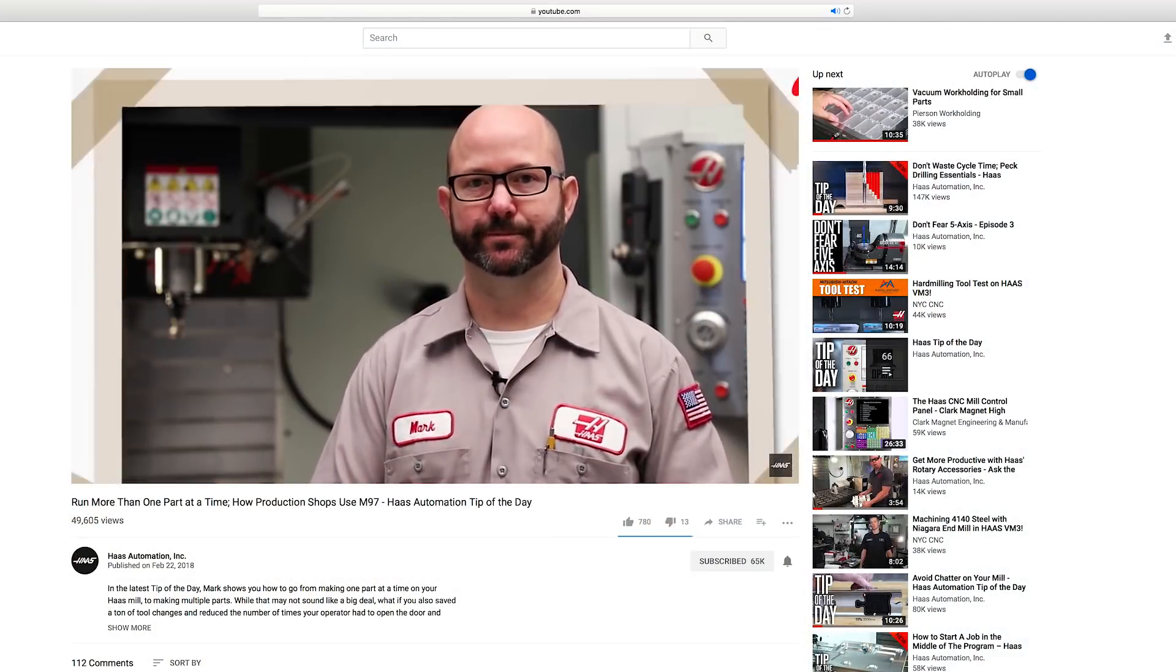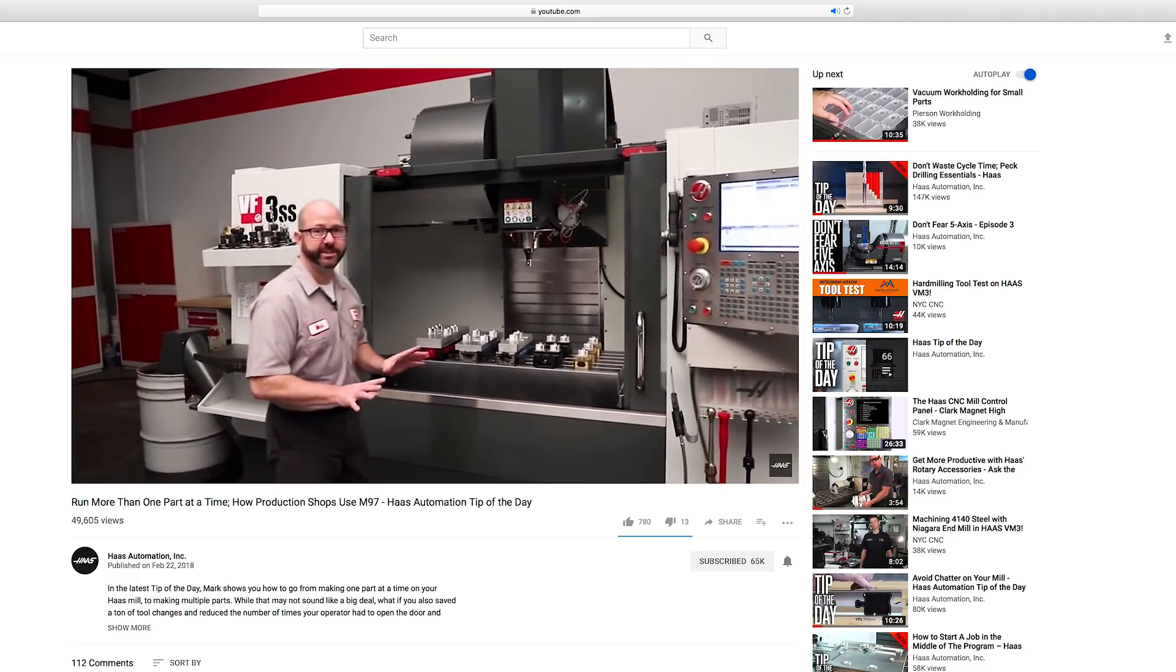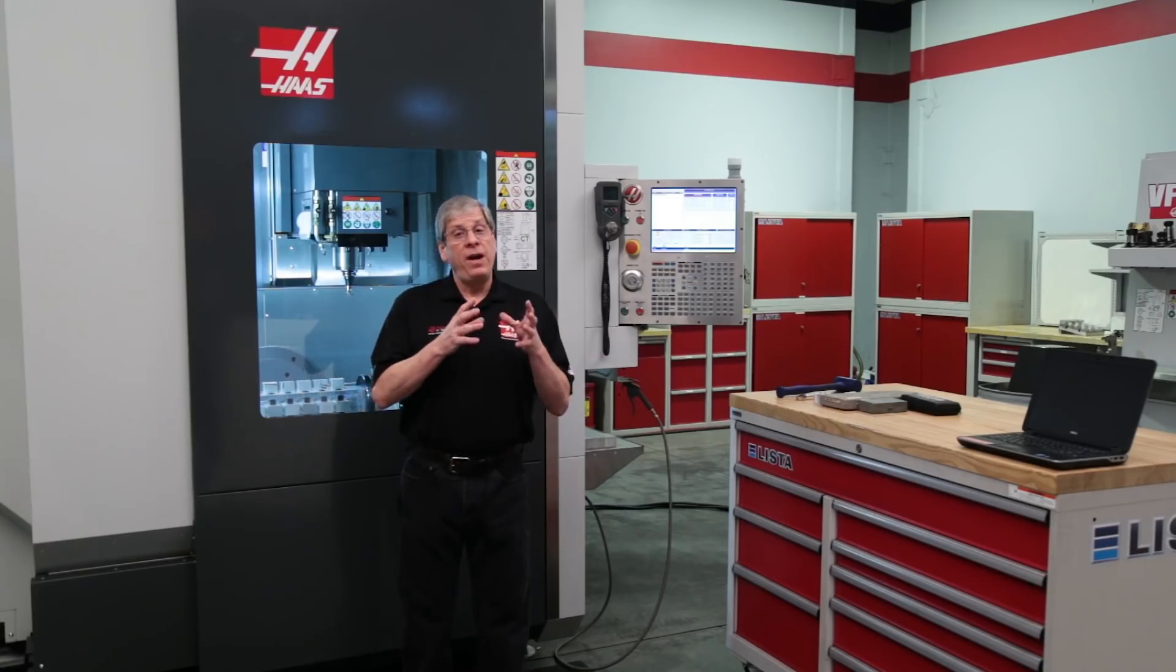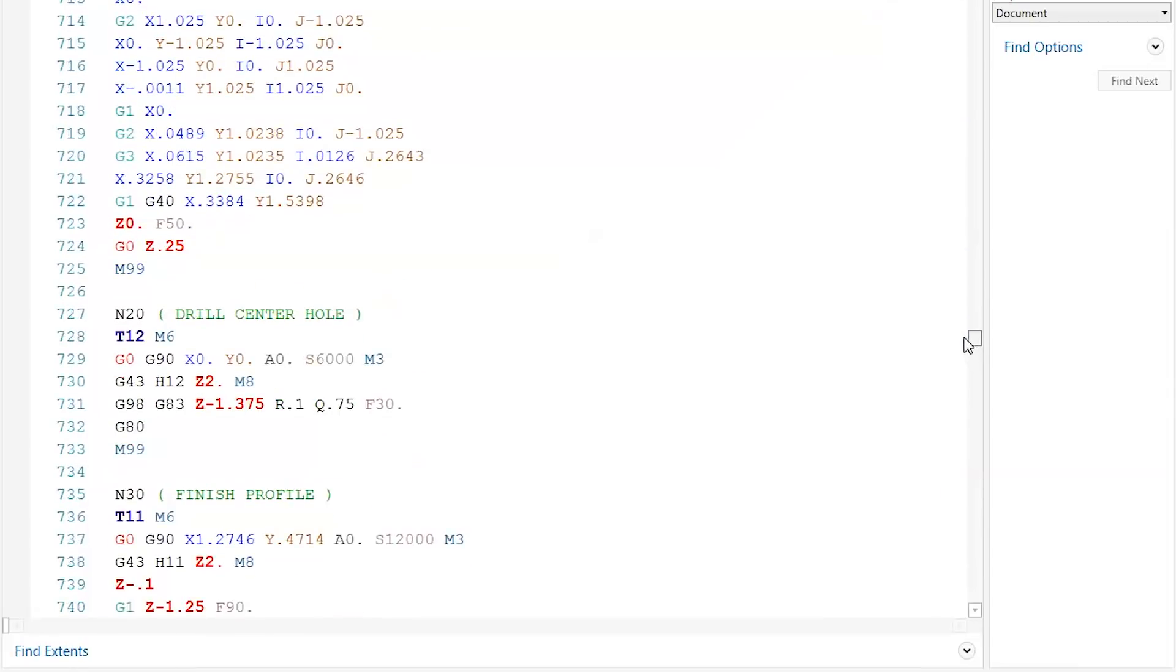Be sure to check out Mark Terryberry's tip of the day video where he shows you the ins and outs of using M97. The final programming step is to add the M30 to the end of the program just below this M30 is where all the tool operation subroutines go.